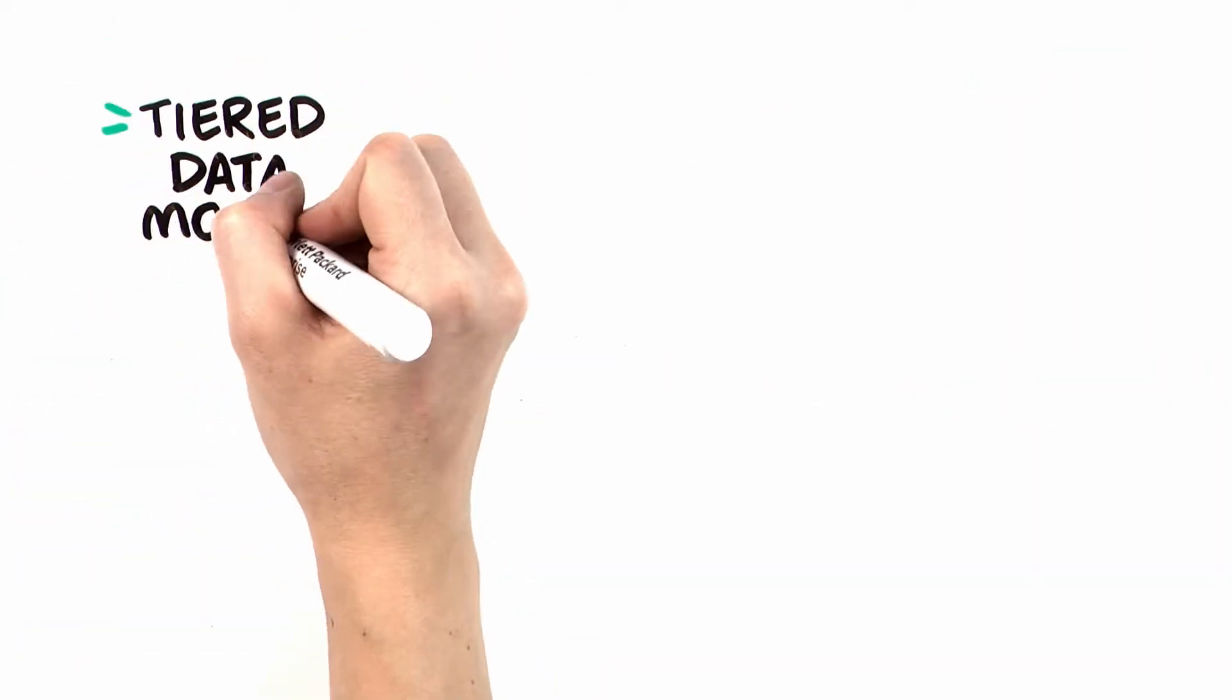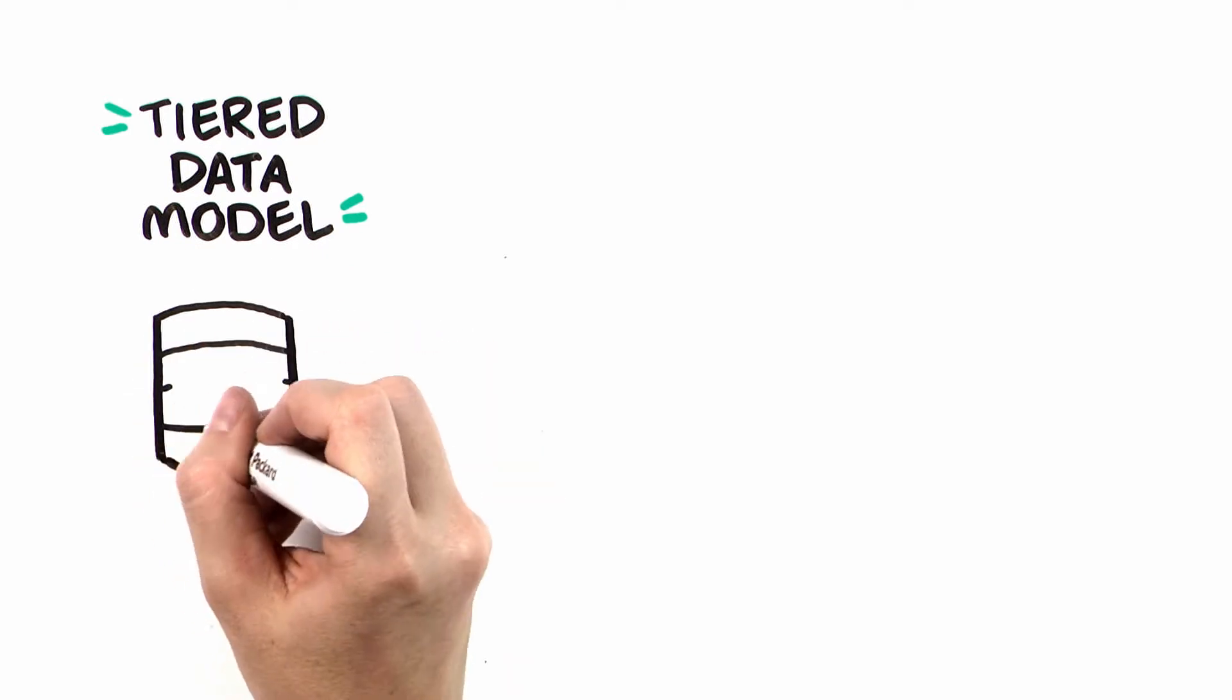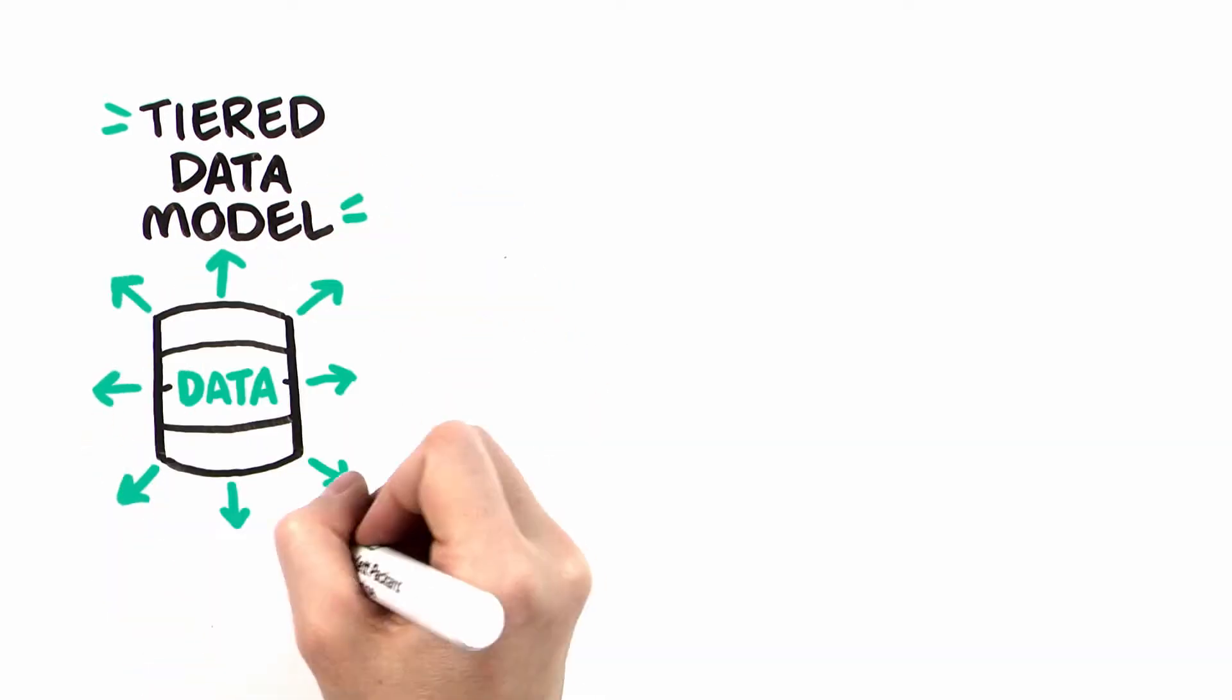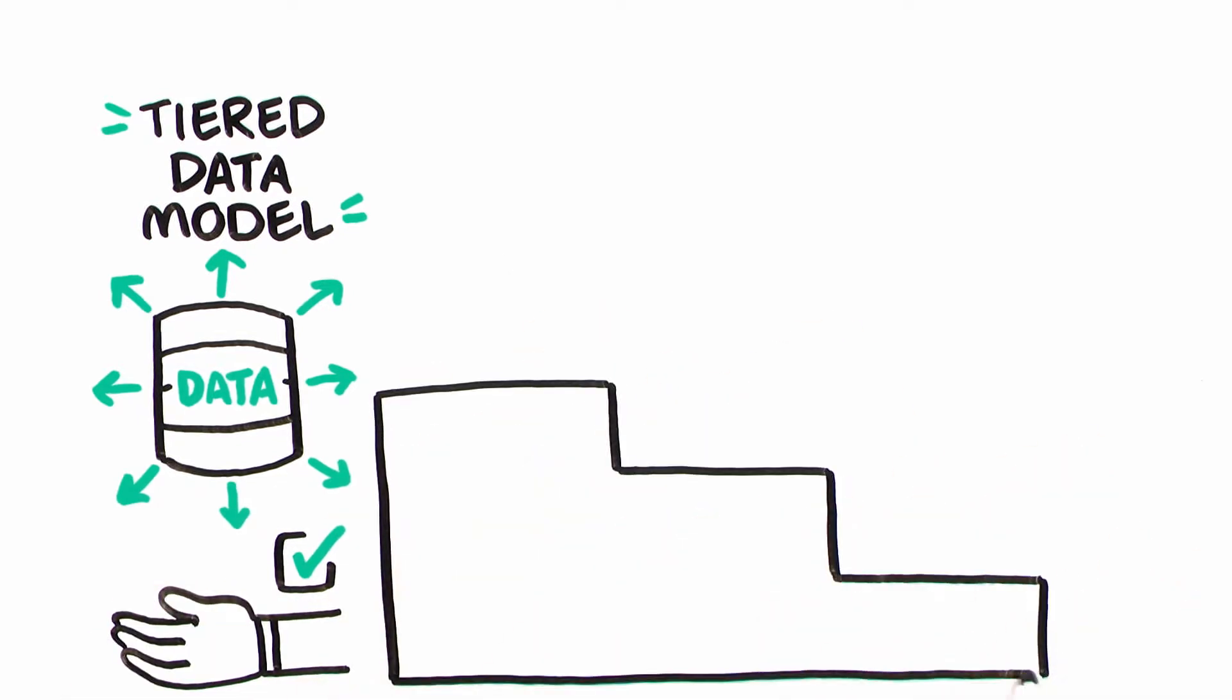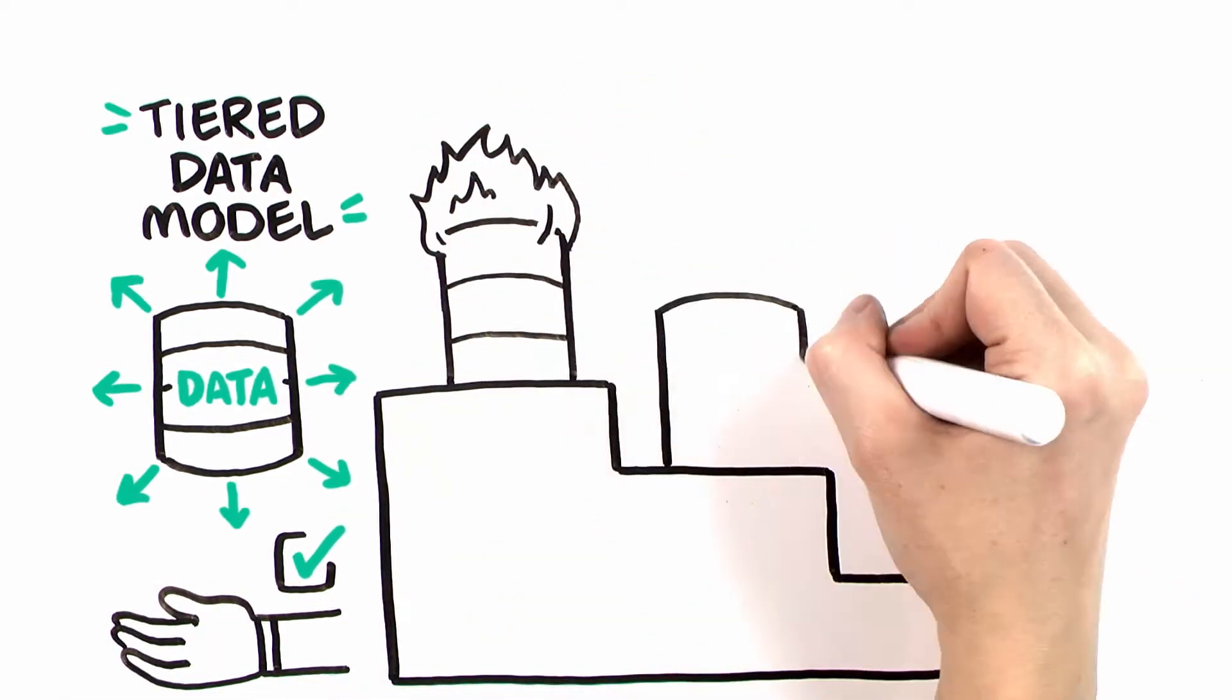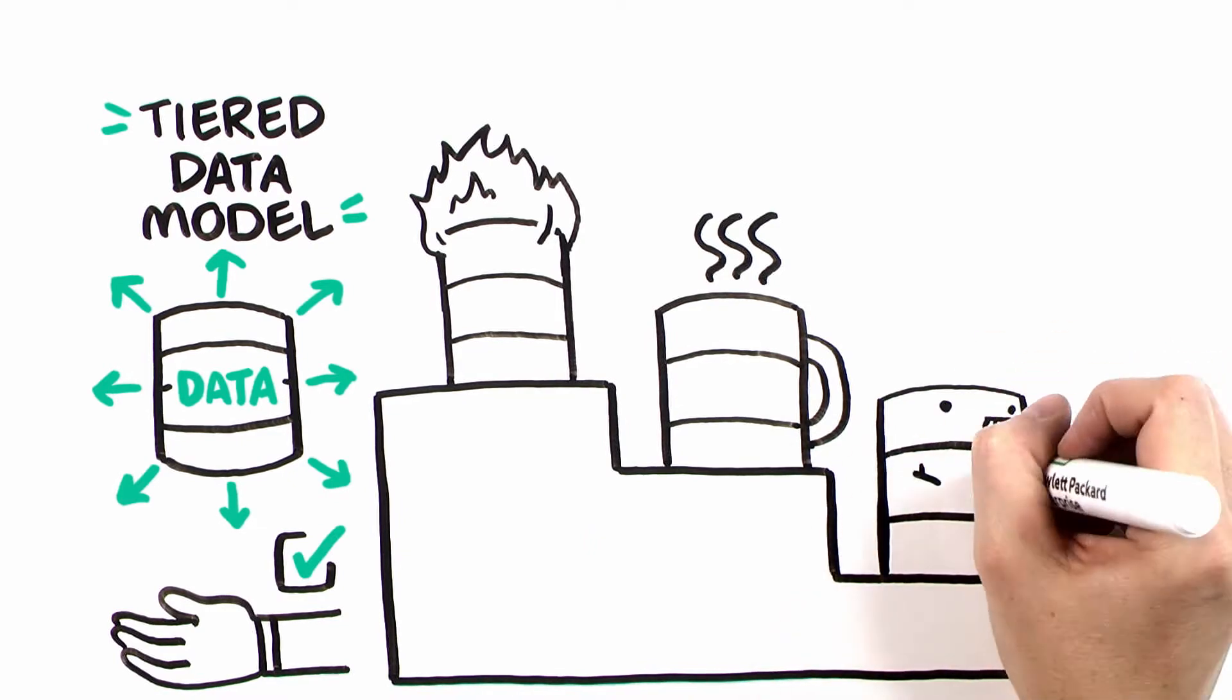A tiered data model is based on the ability to move data and the allocation of data to storage infrastructure that best fits user requirements. Generally data is categorized into hot, warm, and cold tiers.